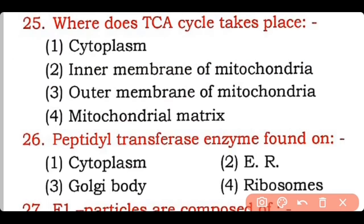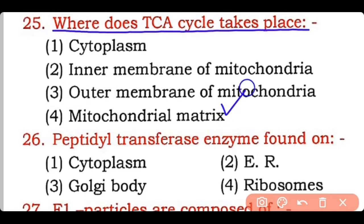Question 25: Where does the TCA cycle take place — cytoplasm, inner membrane of mitochondria, outer membrane of mitochondria, or the mitochondrial matrix? Correct answer is option four — the TCA (tricarboxylic acid) cycle, also known as the citric acid cycle, takes place in the mitochondrial matrix.